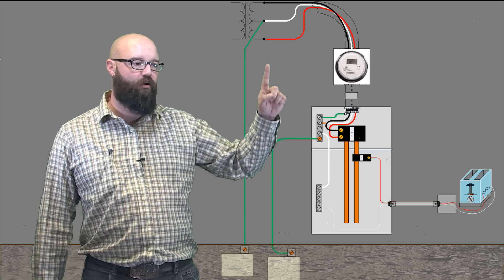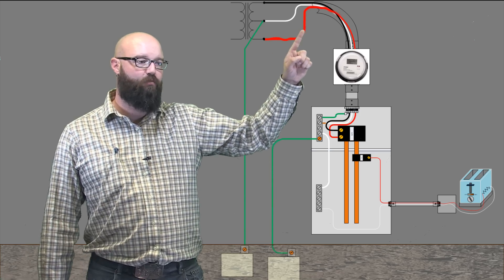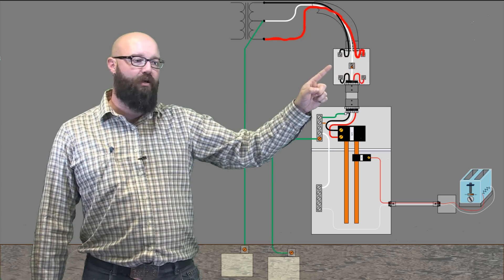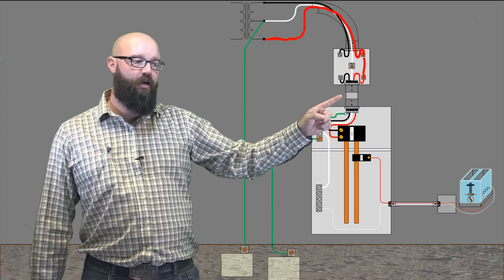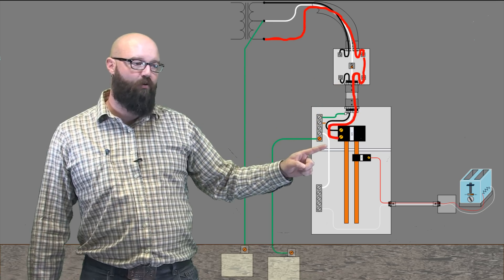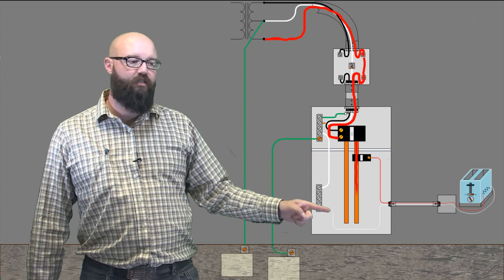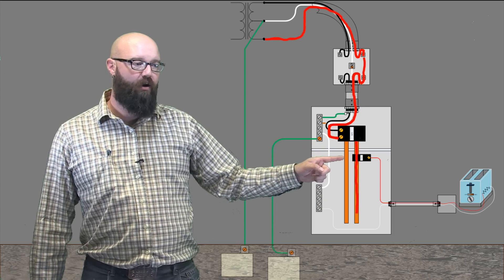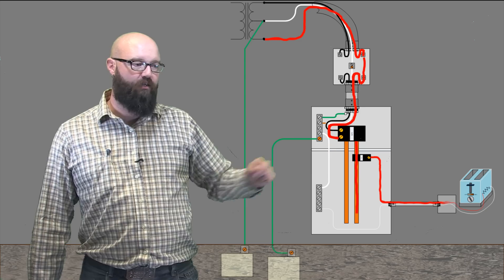So again, we're going to start right here. Current makes its way up to our meter. Our meter completes the connection. And that current makes its way down to our breaker. Our breaker energizes our feeder or our bus bar. And we energize our conductor.